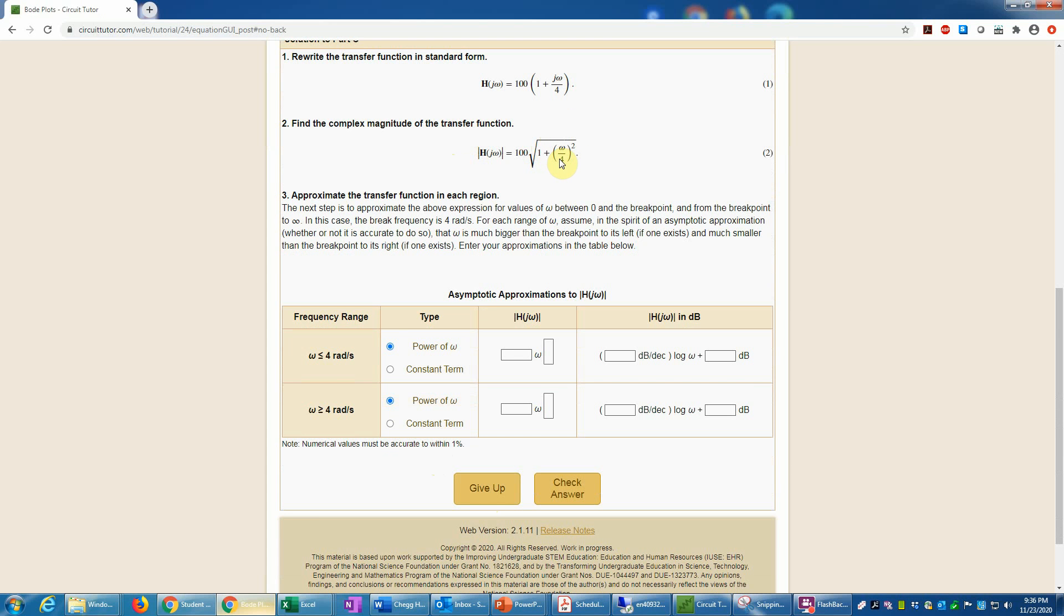It's printed what we did here, which was the magnitude showing as a square root, which is the same thing as the one-half power. The next task is to approximate this transfer function in each region of frequency. The break frequency here is 4 radians per second, that's the denominator for the omega term. That means we can use different approximations for omega much less than 4 and for omega much greater than 4. Here we're supposed to enter those approximations. We can either add a power of omega or, if it's just going to be a constant, we can change it to a constant.